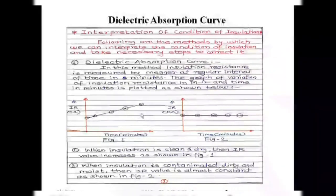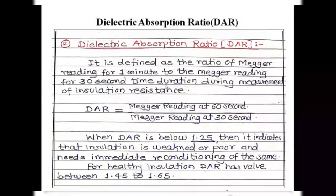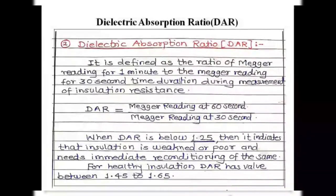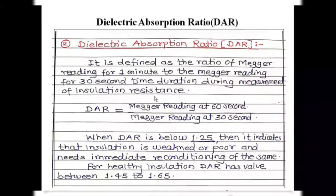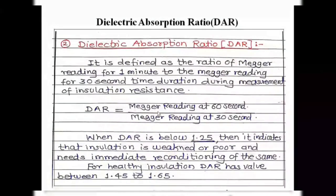The next method is the dielectric absorption ratio (DAR). It is defined as the ratio of the megger reading at 1 minute to the megger reading at 30 seconds during measurement of insulation resistance. Mathematically, DAR equals the megger reading at 60 seconds divided by the megger reading at 30 seconds after the start of the test.